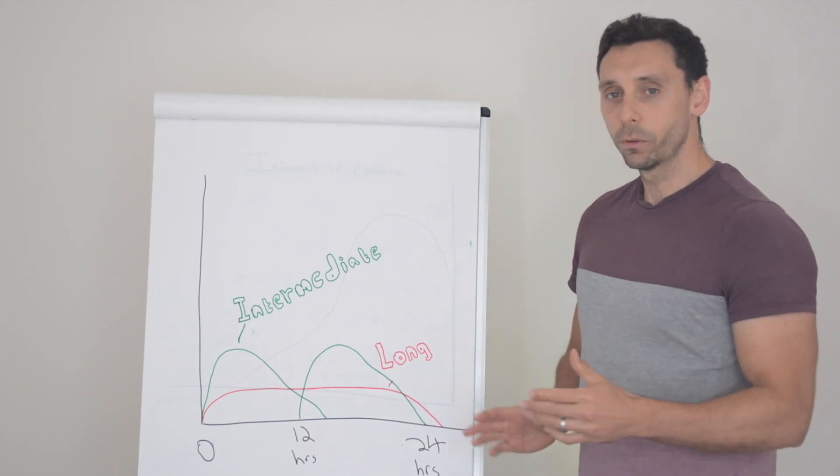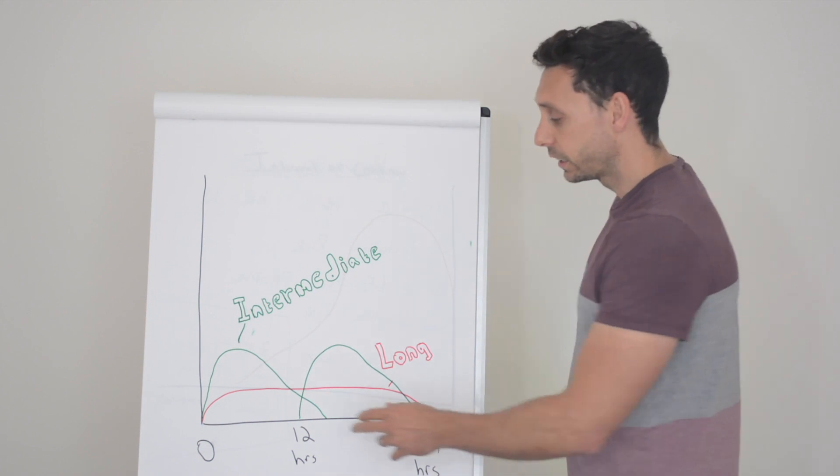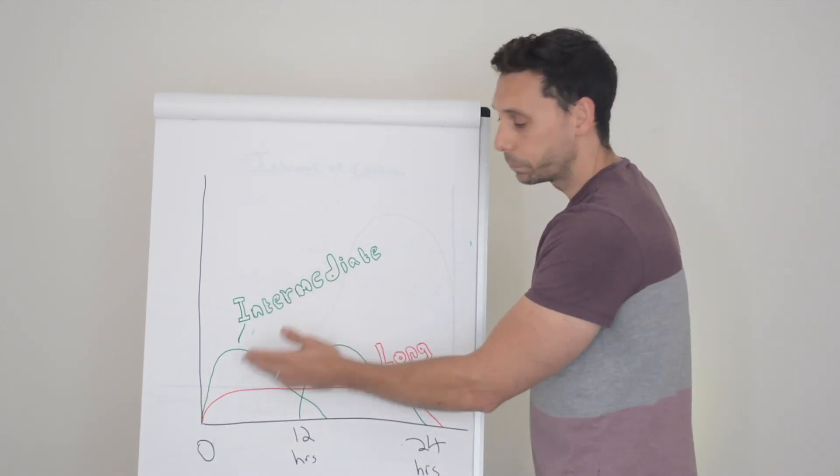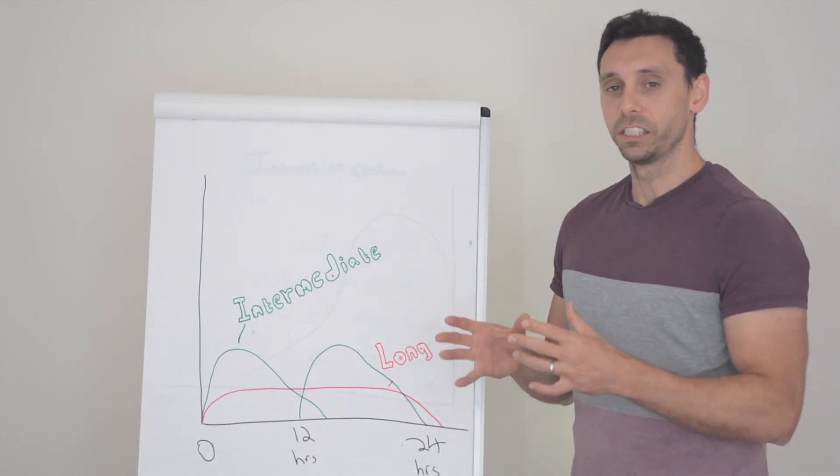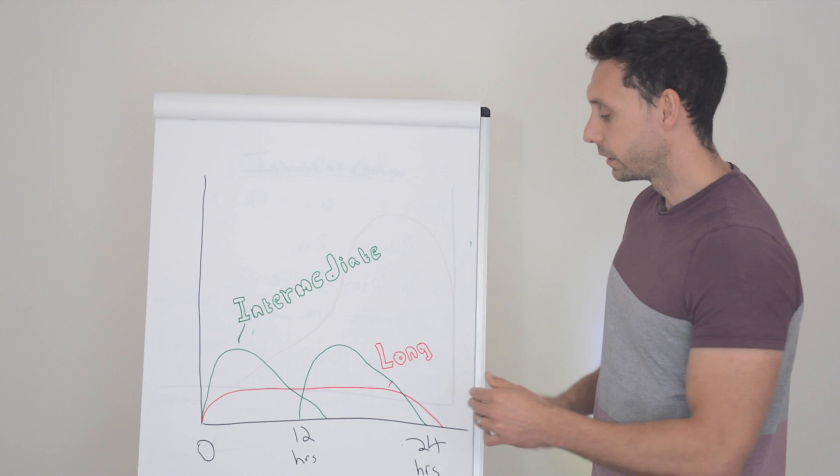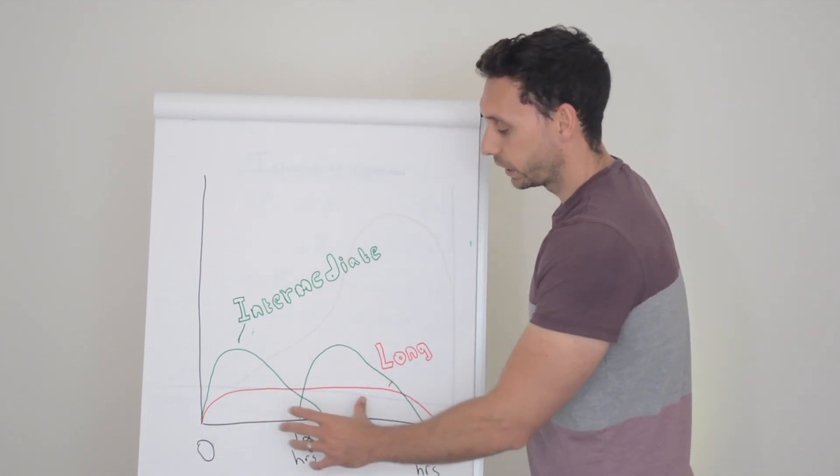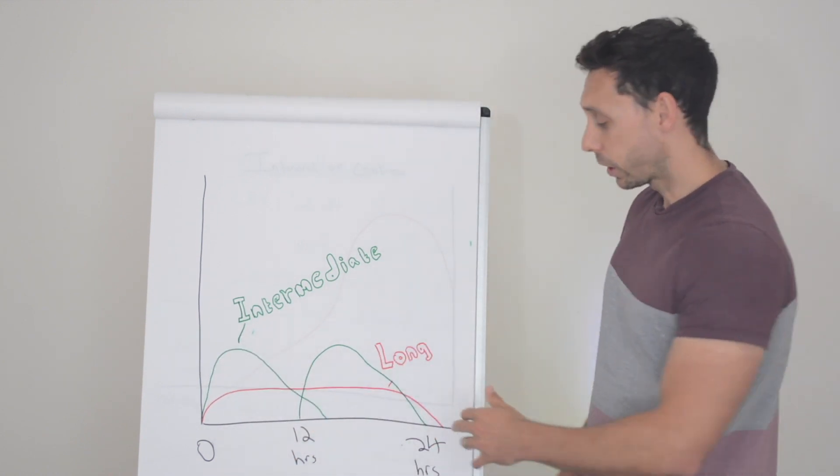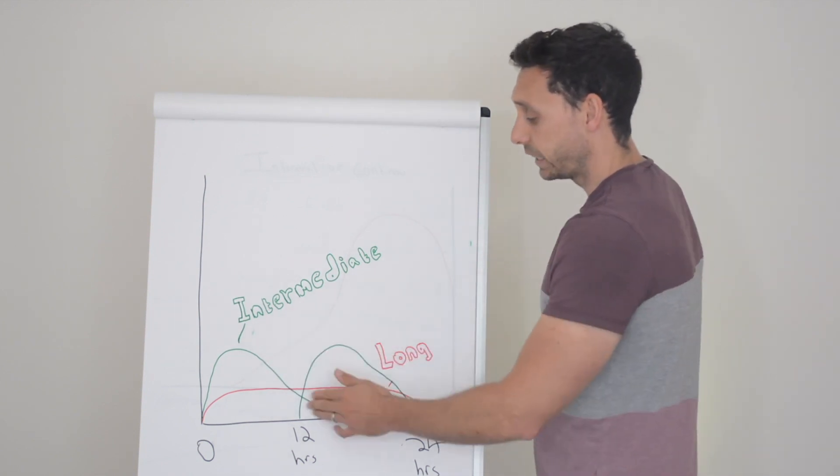So just to highlight that example, if I was to give say 20 units of long acting insulin, that 20 units is distributed over 24 hours. So you get less of a peak because it's got longer to distribute that 20 units out. Whereas 20 units of intermediate acting insulin, if it's only operating for 12 hours in the body, then that 20 units has to be squeezed in into half the time compared to the long acting insulin, which is why we get these insulin peaks.